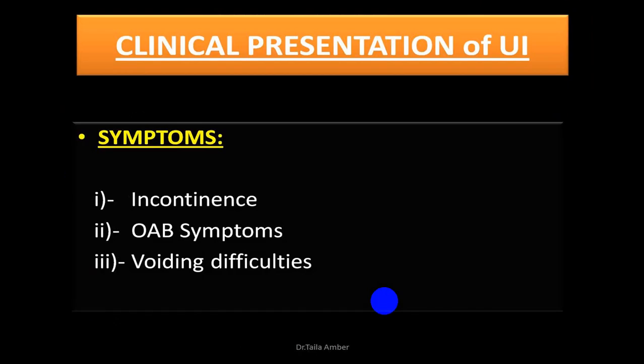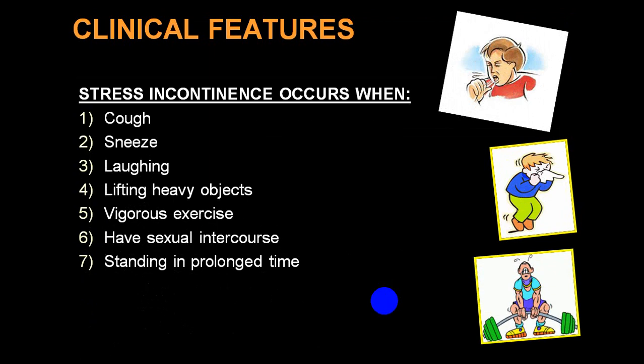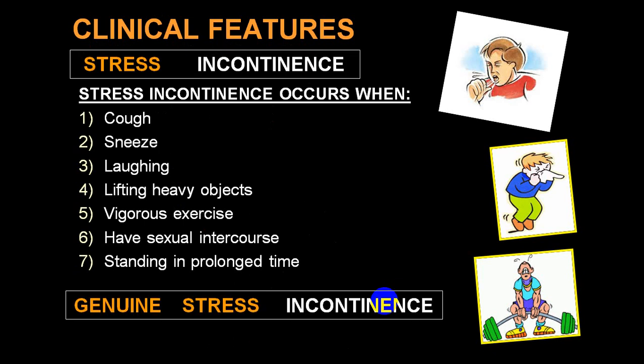The symptoms are commonly incontinence, overactive bladder symptoms, and voiding difficulties. In stress incontinence, the person will have incontinence along with cough, sneezing, laughing, lifting heavy objects, vigorous exercise, after sexual intercourse, or prolonged standing. All these conditions increase intra-abdominal pressure and result in incontinence. This is also called genuine stress incontinence or sphincter incontinence.